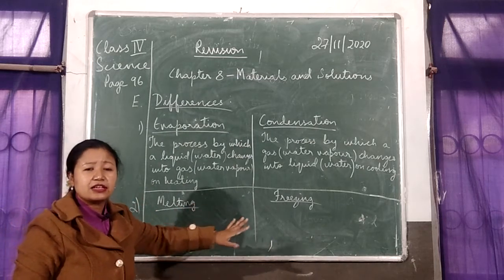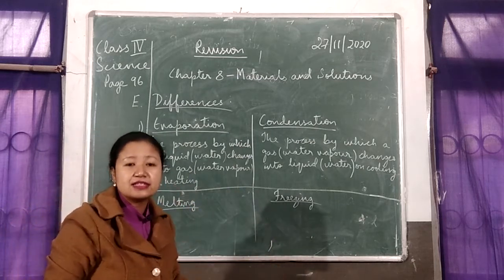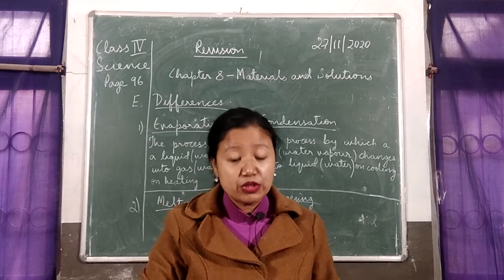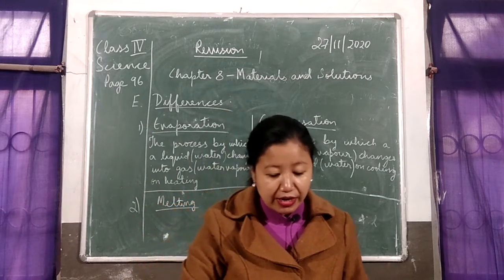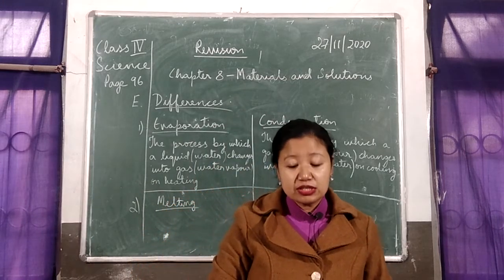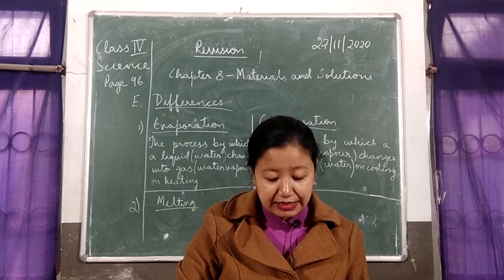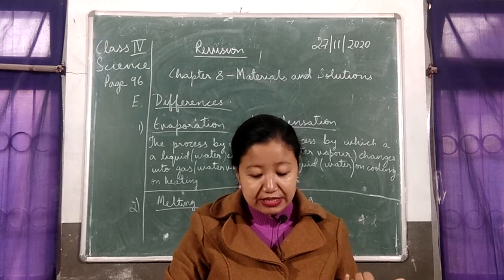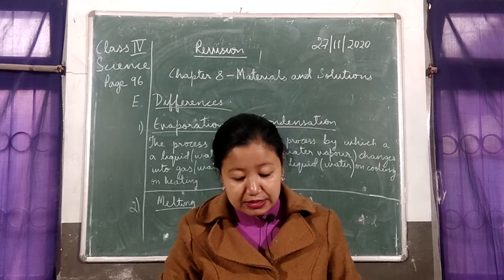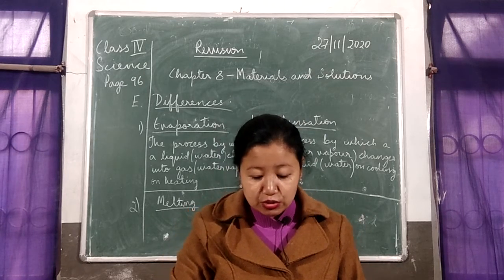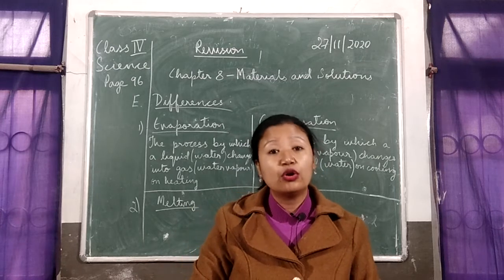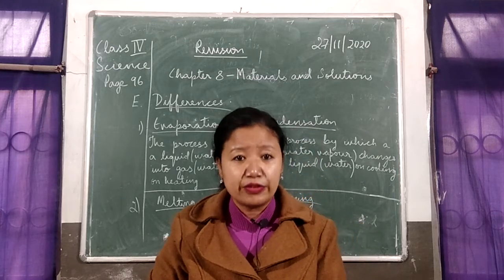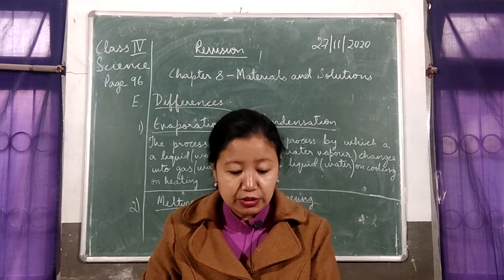Next, melting and freezing — everything is there in your book. Melting is the process by which a solid or ice changes into a liquid or water on heating. And freezing is the process in which a liquid or water changes into a solid or ice on cooling. Everything is there in the book.